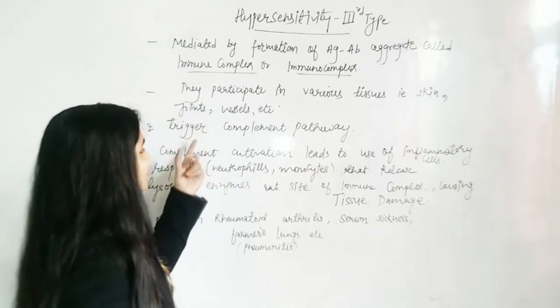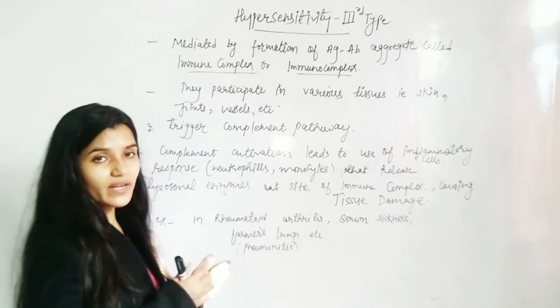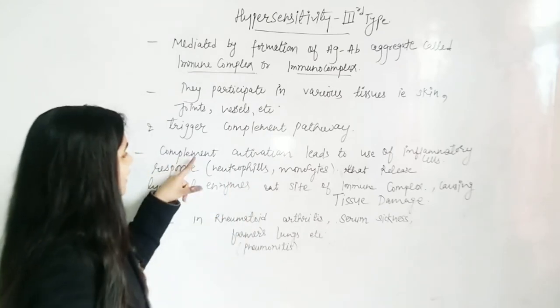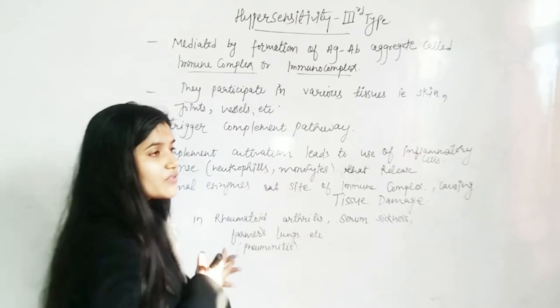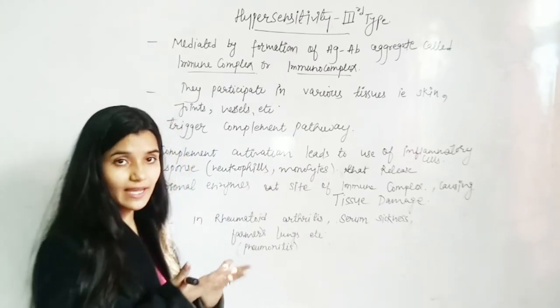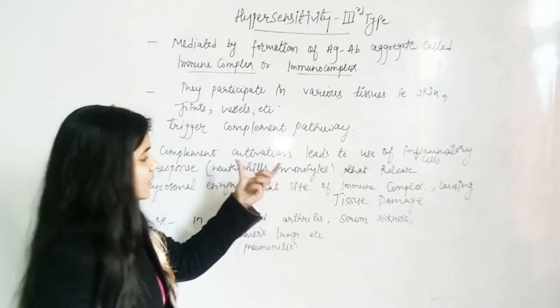After formation, it triggers the complement pathway. What happens in complement pathway activation? Basically, inflammatory cells in our body, special types like neutrophils and monocytes, are recruited.